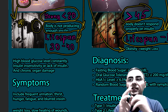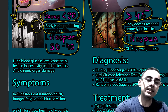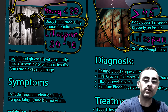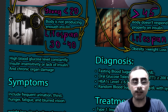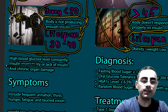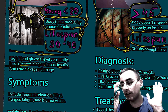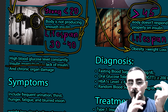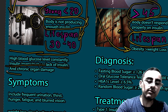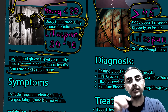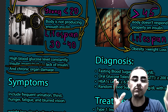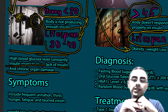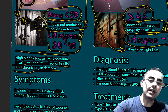The three most important things to say about diabetes are: first, high blood glucose level that is constantly elevated; second, insulin insensitivity or lack of insulin — insulin resistance is Type 2 and lack of insulin is Type 1; and third, chronic organ damage, because elevated glucose acts as a poison for the body and can damage different types of organs.